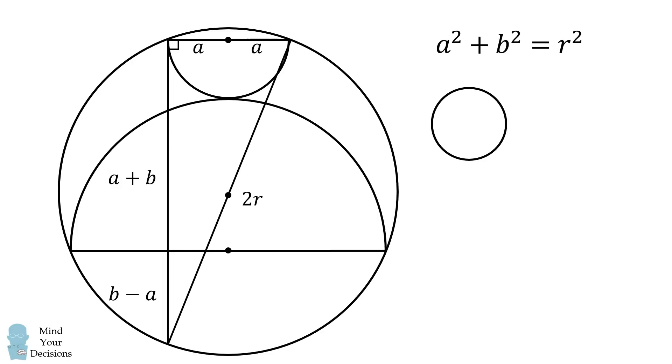From here we can solve the problem. The area of the large circle is equal to 1, which means pi r squared is equal to 1.